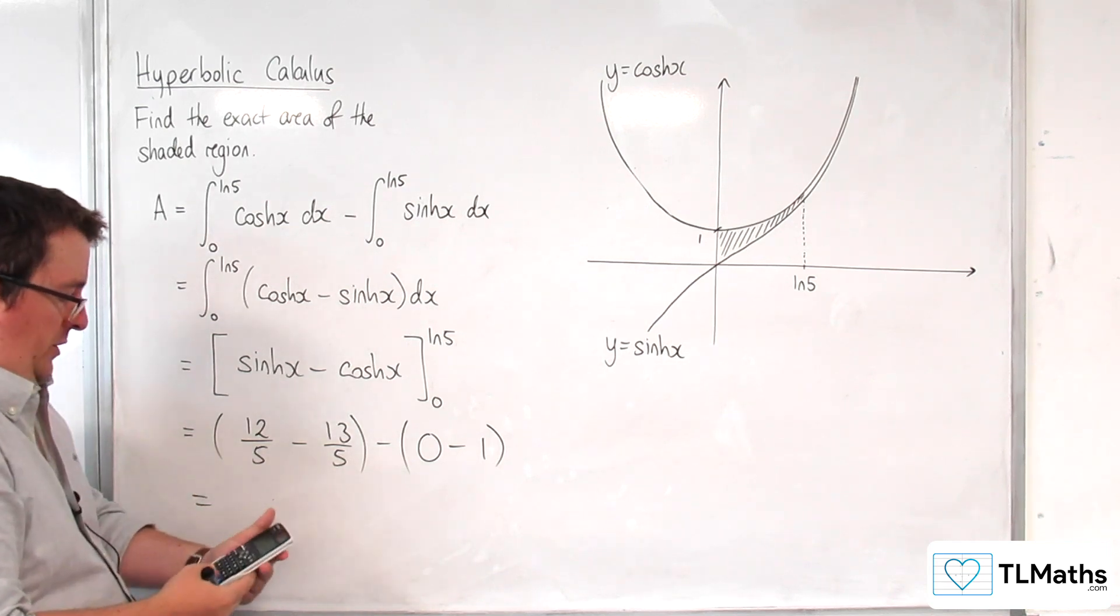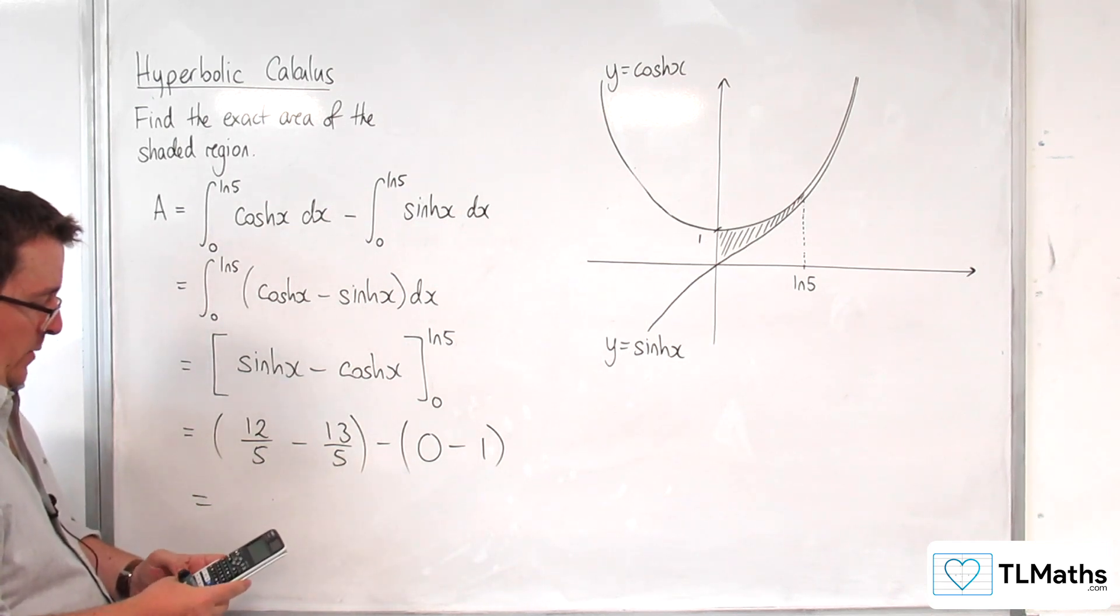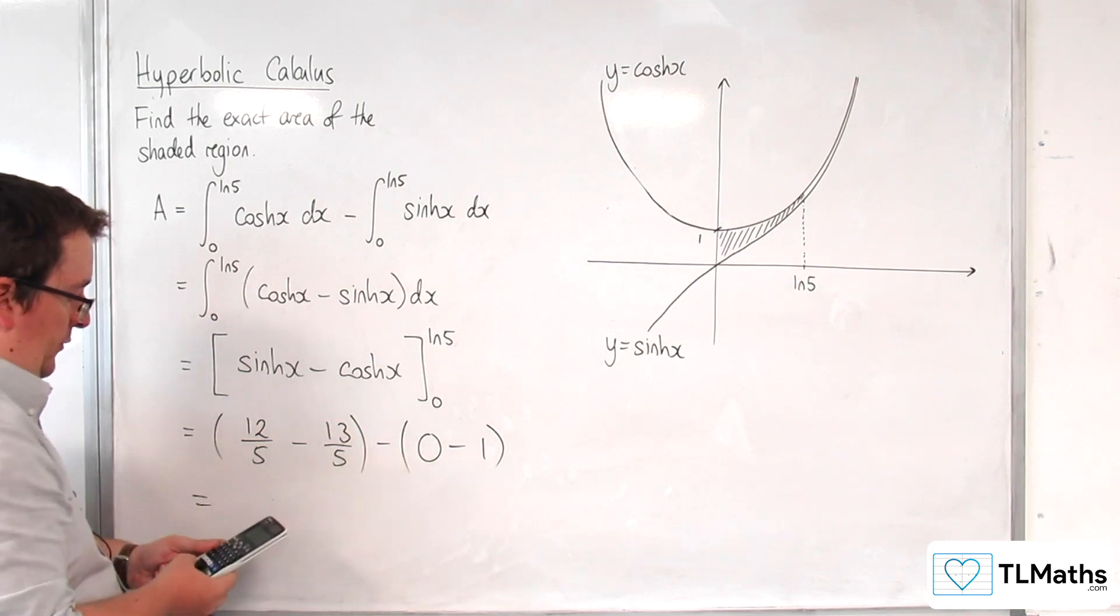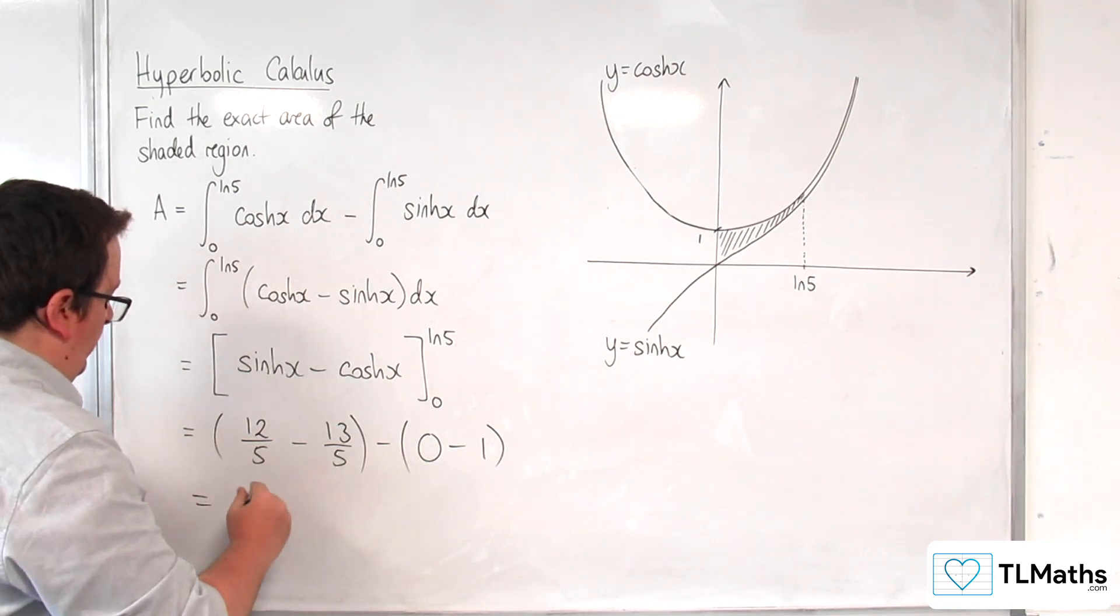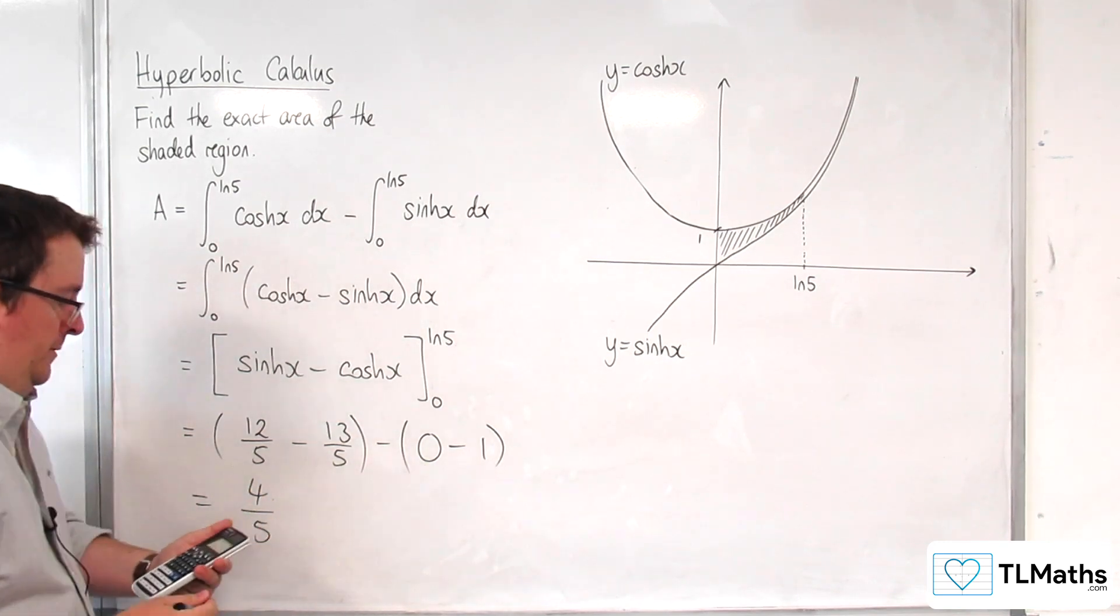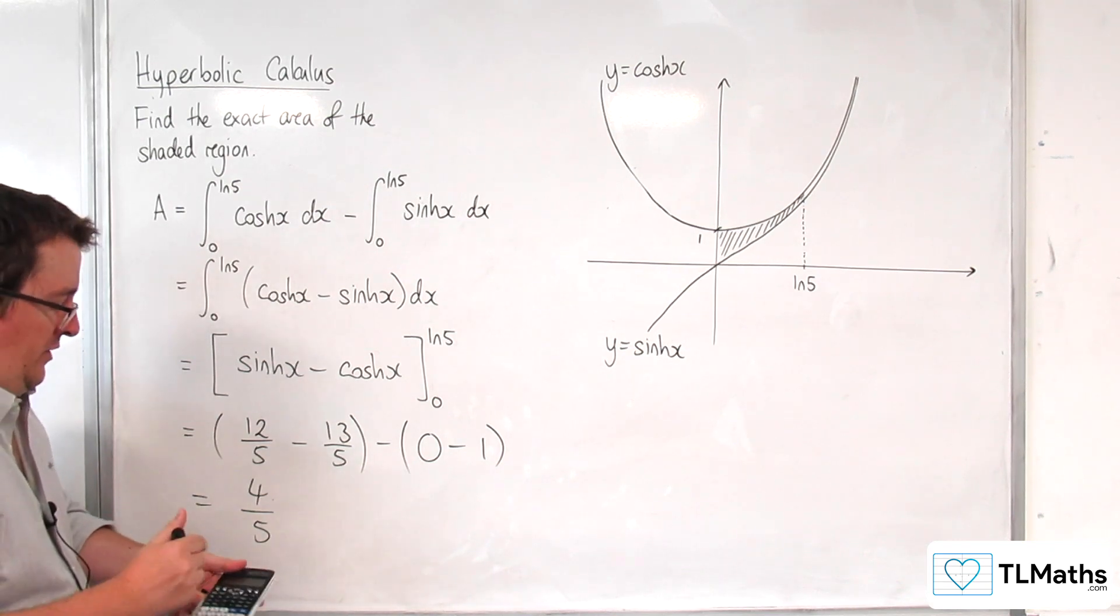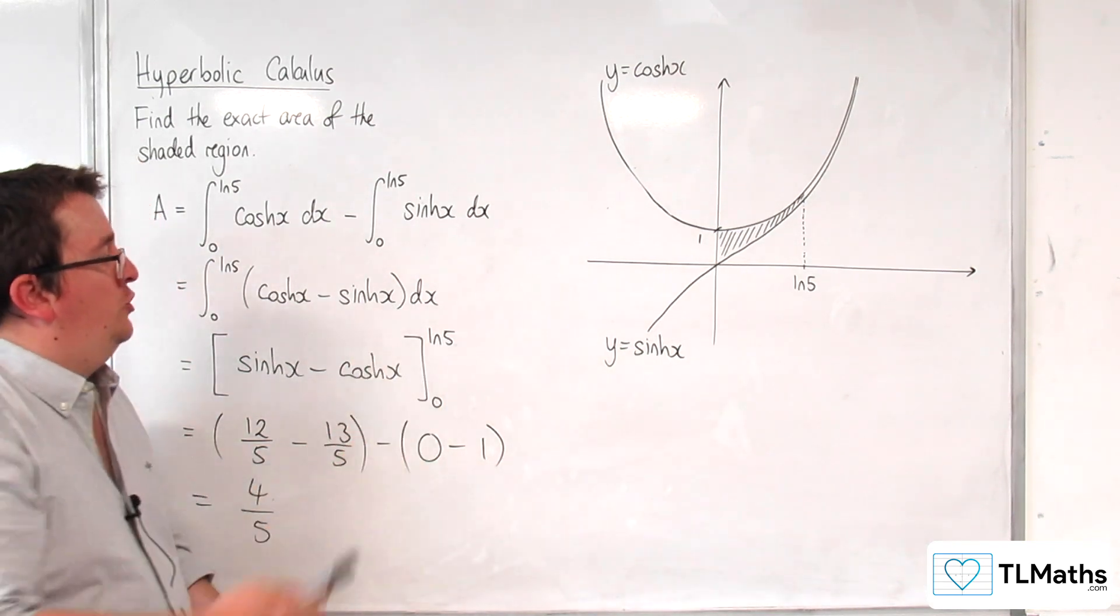So we've got 12 fifths take away 13 fifths plus 1. And that gets us 4 fifths. And so the exact area, as shown, is 4 fifths.